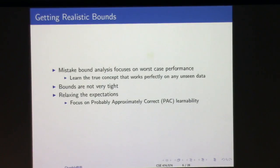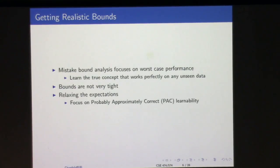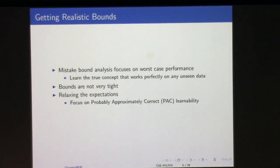We assume training error is zero because this is a consistent learner with c in H, but we do not require test error to be zero — we can accommodate epsilon error. There's one more relaxation I'll introduce shortly. This whole framework is called Probably Approximately Correct learning — PAC learning. It says: let us not assess algorithms in terms of perfect behavior, but only in terms of being probably approximately correct, then find bounds on m.